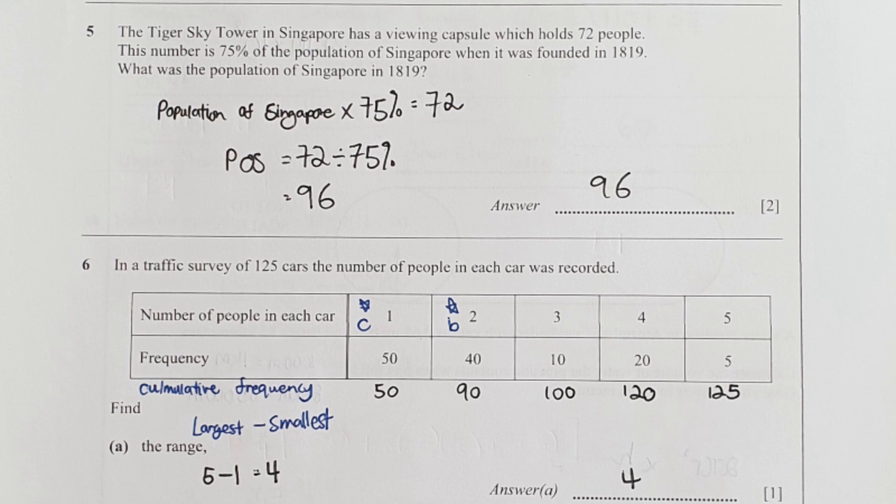For question 5, the population of Singapore times 75% equals to 72, so population of Singapore is 96.